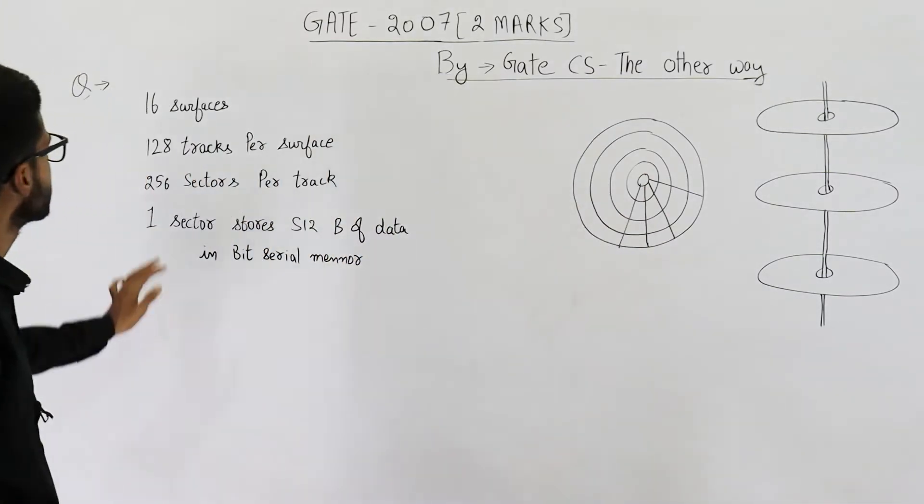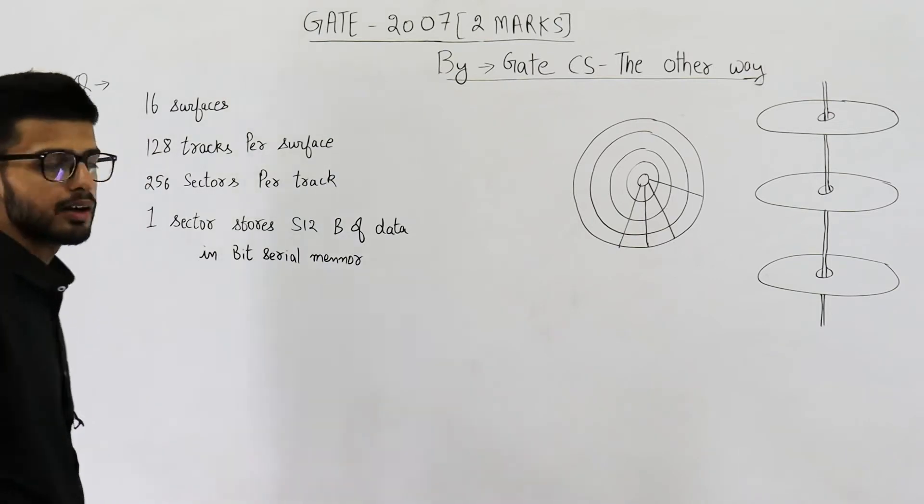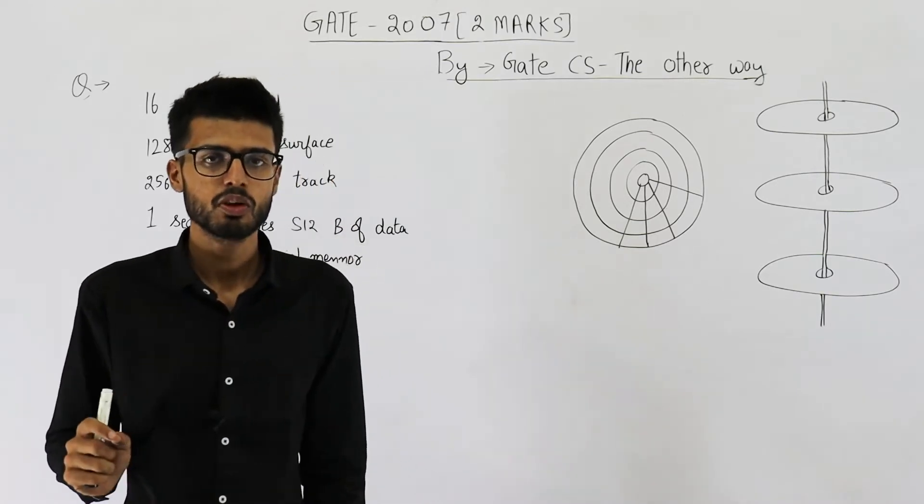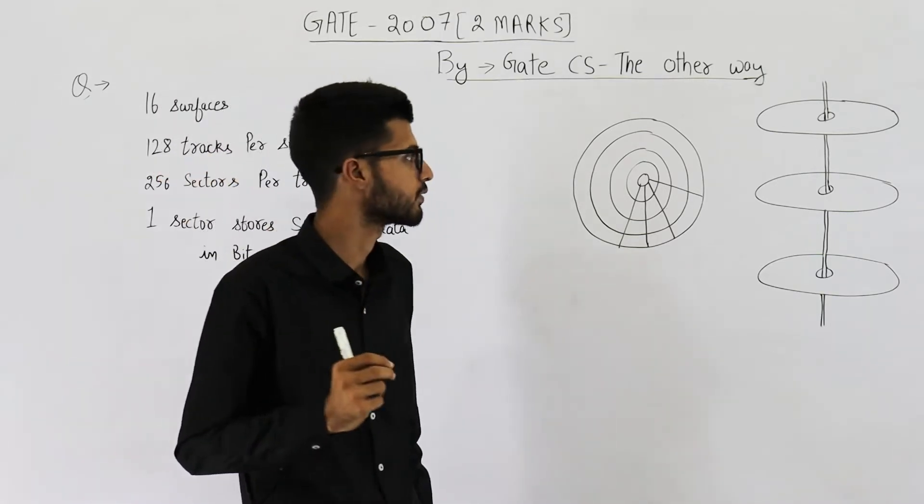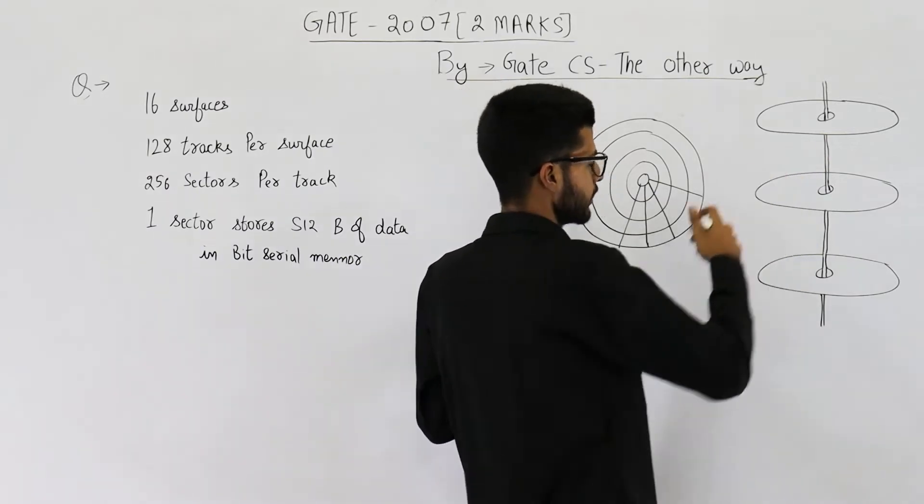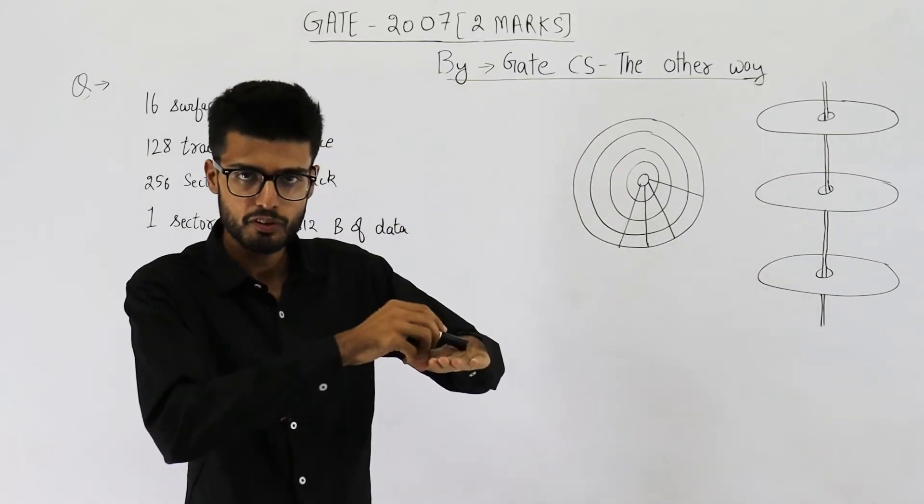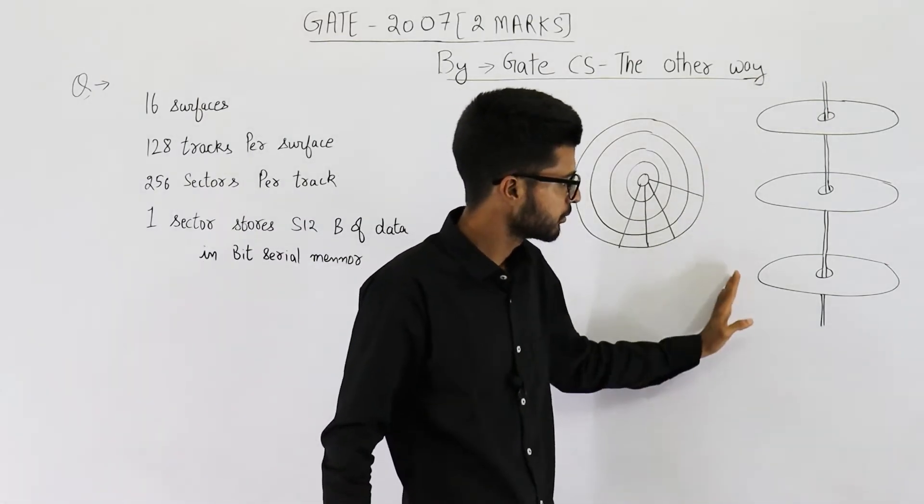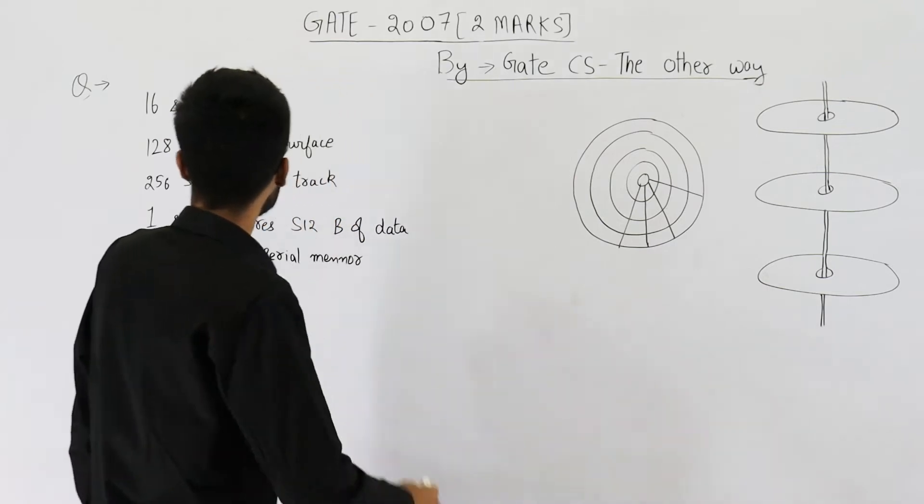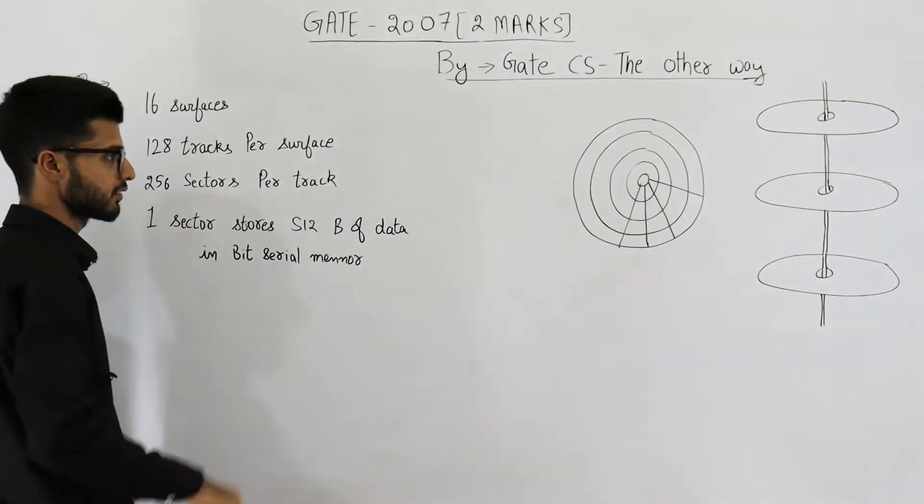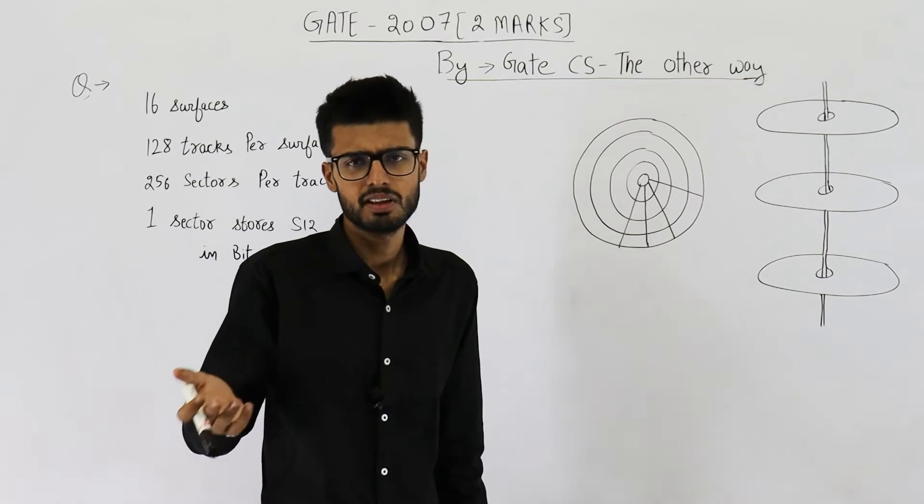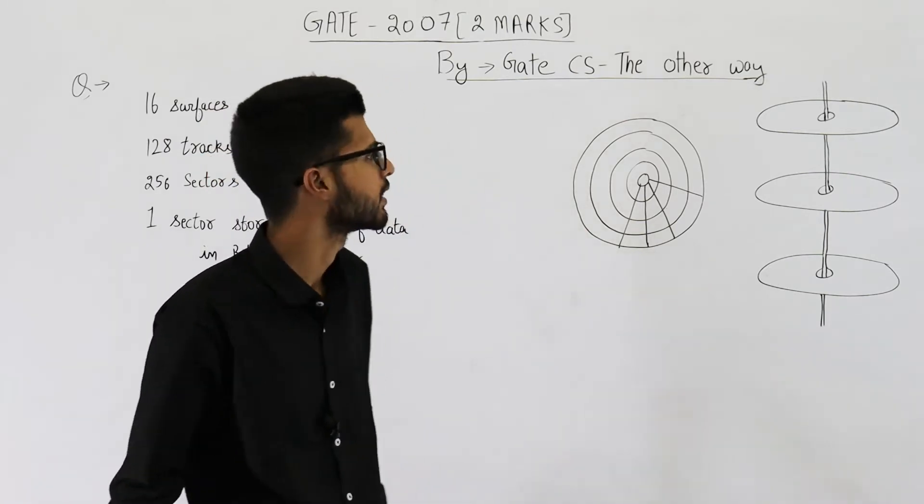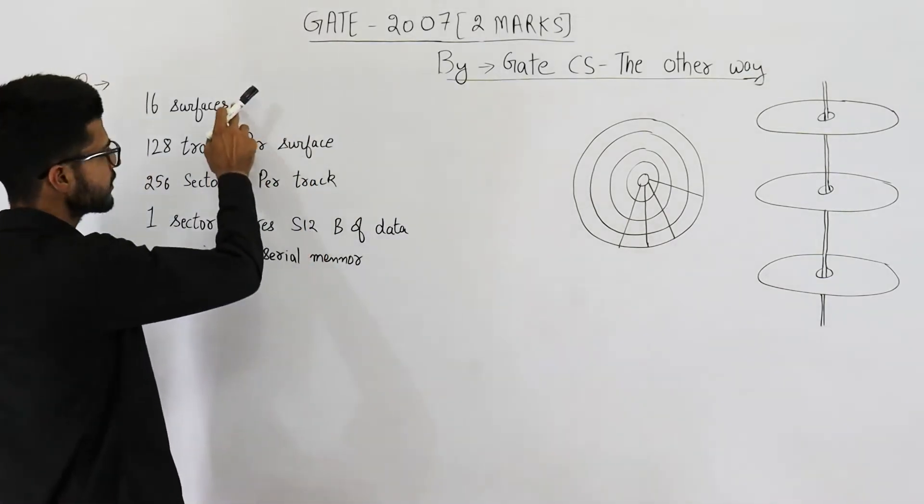Just have a look here, they are saying you have a total of 16 surfaces. A platter probably has two surfaces - the top surface and the bottom surface of a platter. So we have probably eight platters in this disk and a total of 16 surfaces. There might be even 16 platters if a platter has only one surface, but that does not matter at all. Number of surfaces is 16.